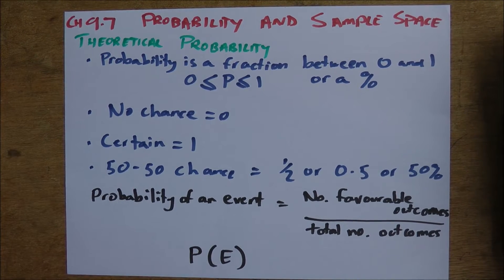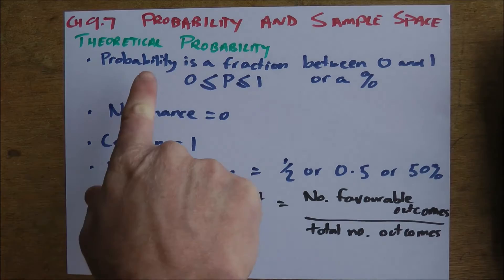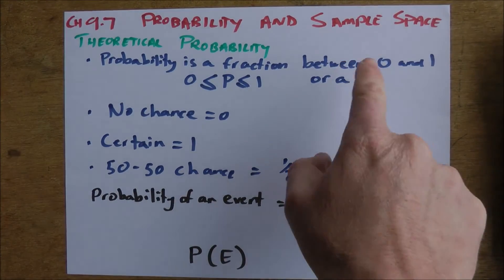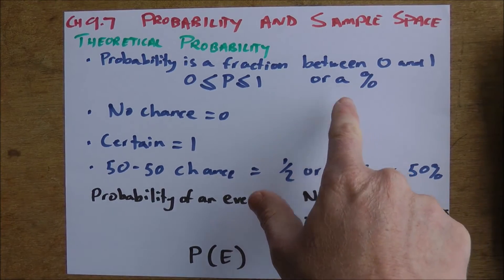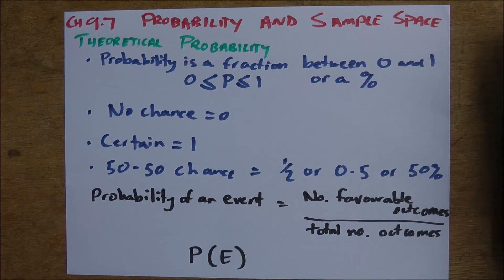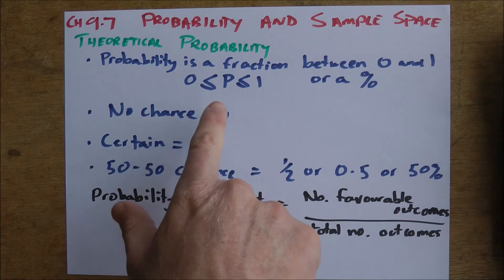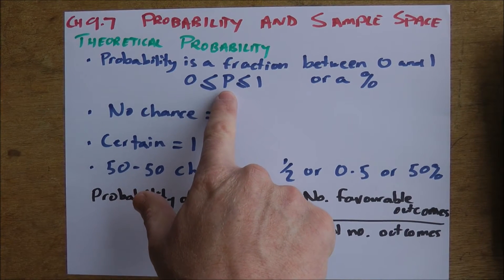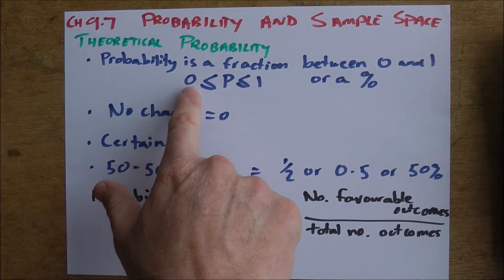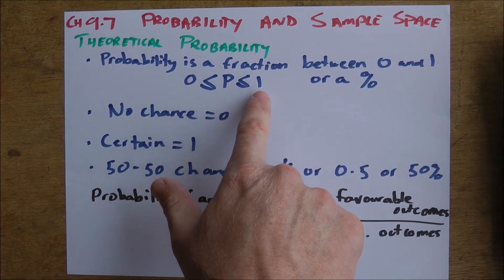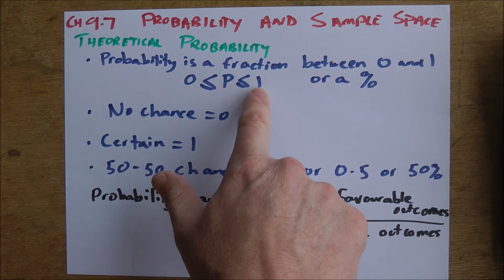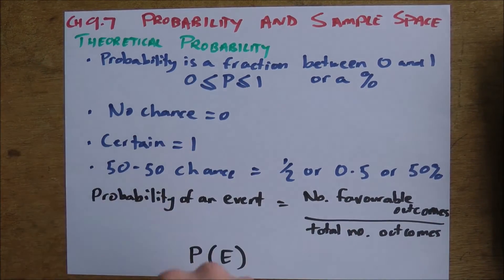So, theoretical probability. Probability is always going to be a fraction, and it's between zero and one. By fraction, it could be a decimal fraction or a normal fraction. Sometimes we can write fractions as percentages. The probability we work out must be greater than or equal to zero and less than or equal to one — so the probability could be one, zero, or anywhere in between.